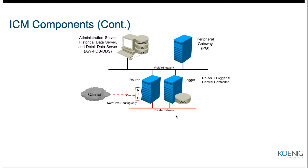Looking at the ICM design, we have a router, a logger, administration and data servers, and peripheral gateways as the primary components. There is an important terminology: when you combine router, logger, and NIC together, it forms another term called the central controller. So when someone says central controller, they are referring to router and logger.